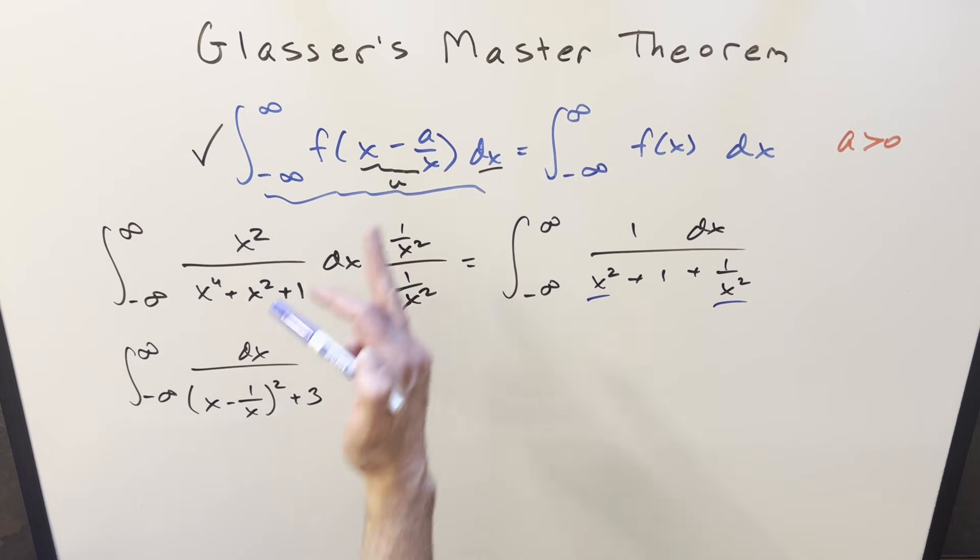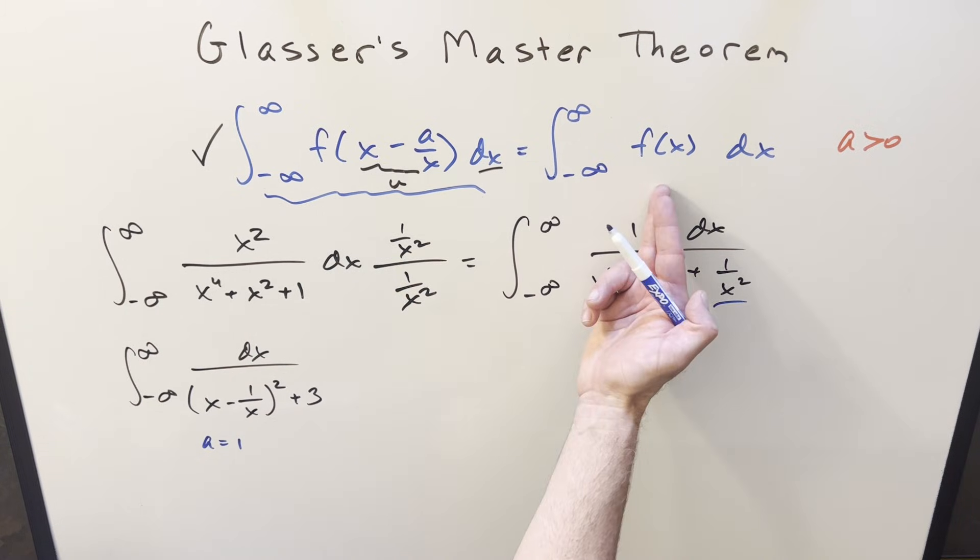But then what we have here, it's exactly set up for our formula here where the a value on it is just 1. Not that the a value really matters, but notice the a value goes away when we transform it.